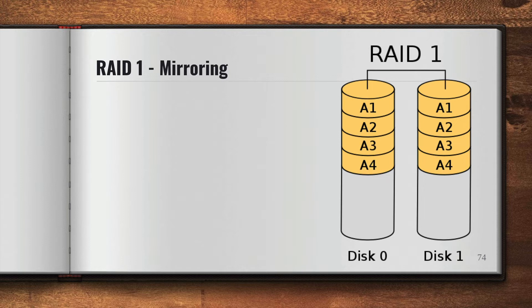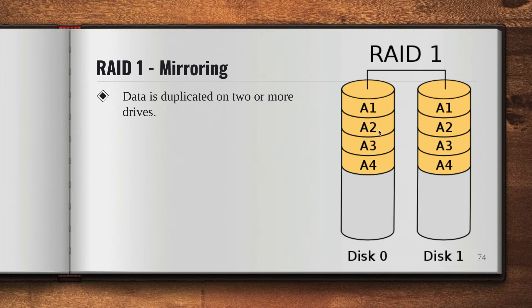Next up is RAID 1, which is mirroring. In this configuration, data is duplicated on two or more drives. So as you can see, we have A1, A2, A3, A4 on disk zero, and the same exact copy has been added to disk one as well. It definitely helps us in terms of data security, as we have a backup in case one disk fails. So it offers redundancy — meaning surplusness — by adding another drive as a backup, so if one drive fails, at least we have the second one.